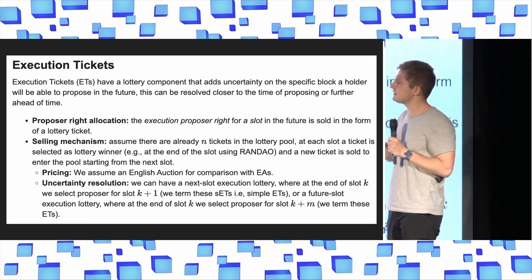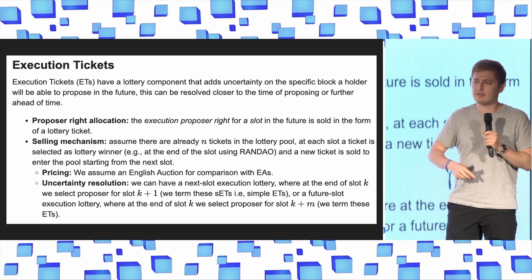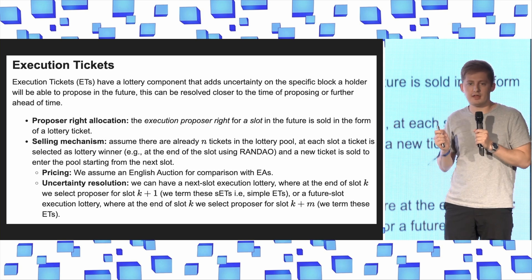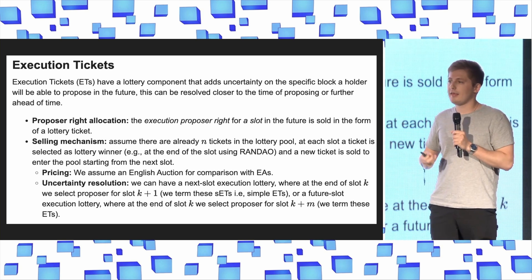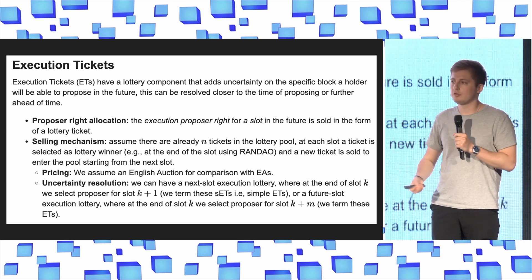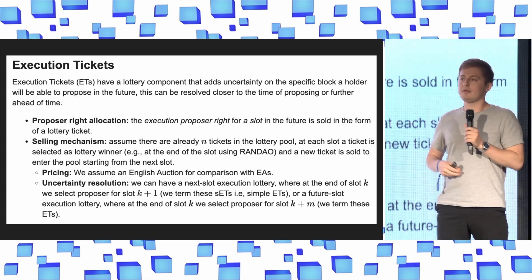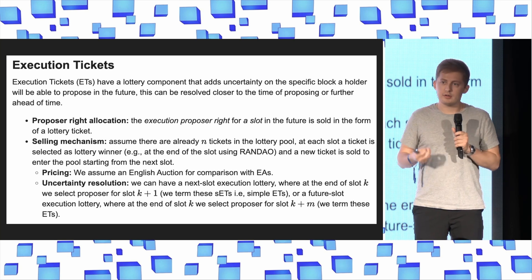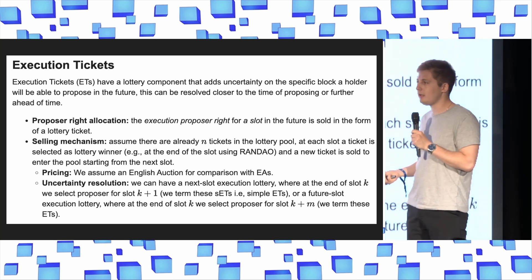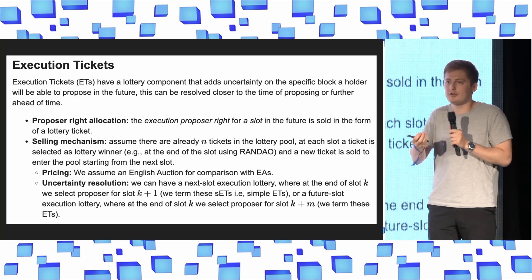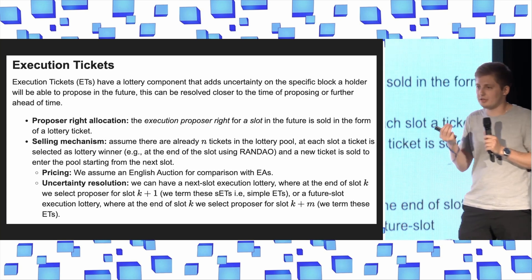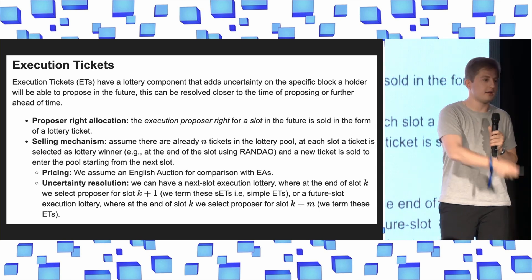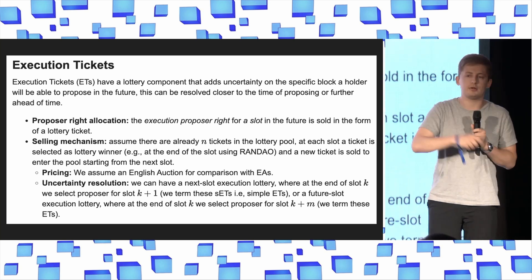Execution tickets have a slightly different mechanism. In the steady state, there exist N tickets in the pool that people are holding. Every block, one ticket is chosen and becomes the winner of the execution payload. Their ticket is burnt and a new one is minted and sold. An execution ticket gives you a right to a future unknown block where you'll propose the execution payload. You're willing to pay the expected future MEV in an unknown block. The core difference between execution auctions and execution tickets is that one uses determinism and one uses non-determinism.